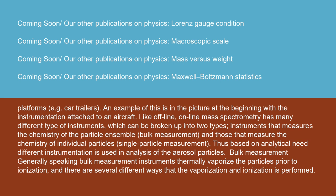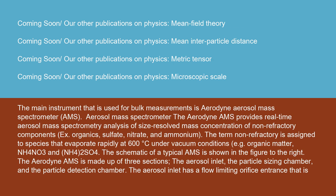The main instrument used for bulk measurements is the Aerodyne aerosol mass spectrometer (AMS). The Aerodyne AMS provides real-time aerosol mass spectrometry analysis of size-resolved mass concentration of non-refractory components, including organics, sulfate, nitrate, and ammonium. The term non-refractory is assigned to species that evaporate rapidly at 600 degrees Celsius under vacuum conditions, such as organic matter, NH4, NO3, and (NH4)2SO4. The Aerodyne AMS is made up of three sections: the aerosol inlet, the particle sizing chamber, and the particle detection chamber.